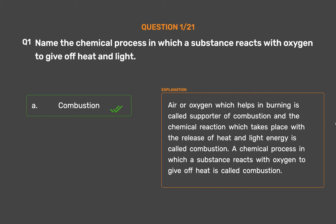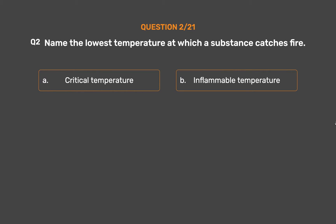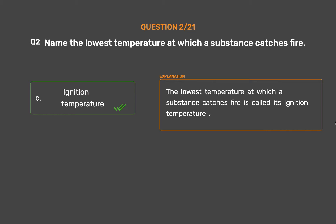Question number 2: Name the lowest temperature at which a substance catches fire. Option A: Critical temperature. Option B: Inflammable temperature. Option C: Ignition temperature. Option D: None of these. The correct answer is Option C: Ignition temperature. The lowest temperature at which a substance catches fire is called its ignition temperature.